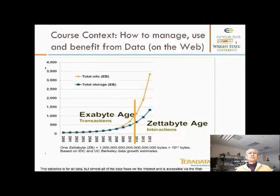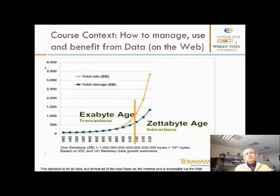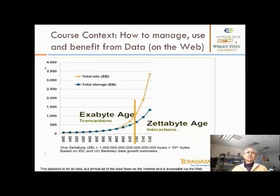You can see in this chart that the amount of data has grown substantially over the years. One statistic says that there is as much data created in the last two years as there has been for the entire history before that — so roughly every two years we may be doubling the data available on the web. With all this data it becomes very hard for people and applications to make decisions and use just the right amount of data for their purpose.